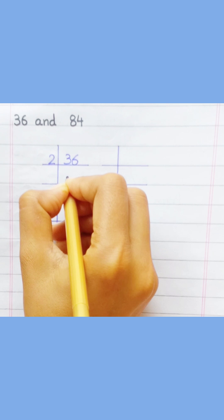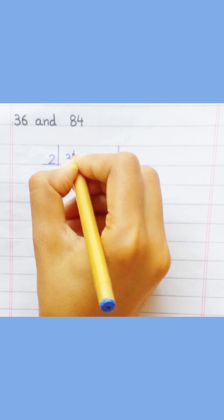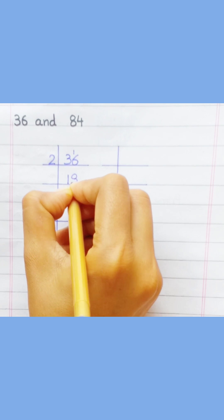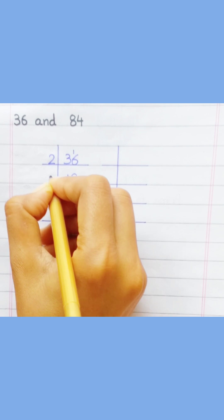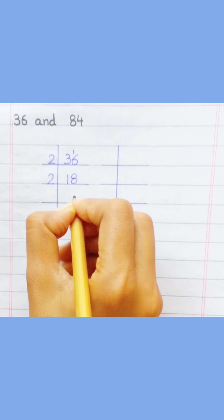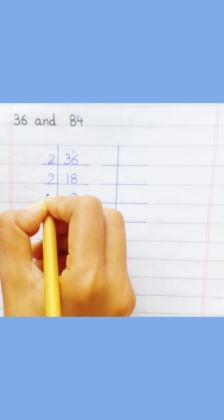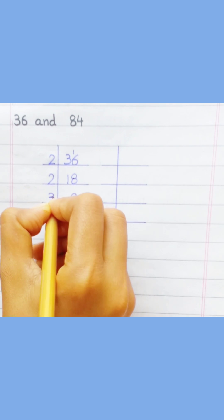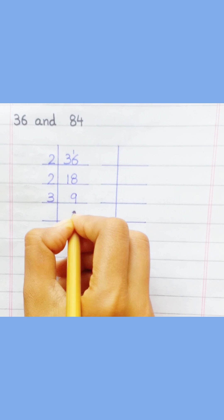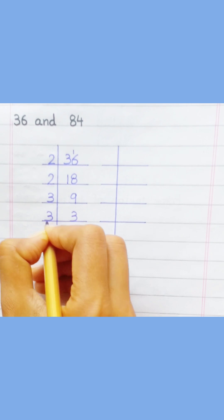Thirty-six: two ones are two, two eights are sixteen, two nines are eighteen, three threes are nine, three ones are three.